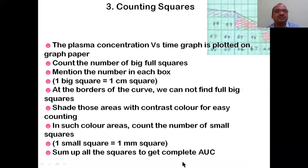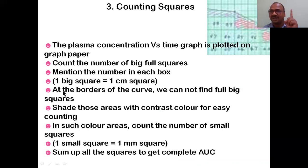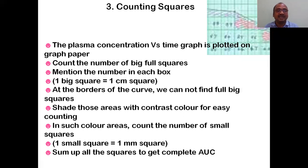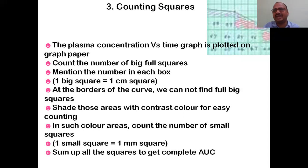Procedure: plot plasma concentration versus time on graph paper. Count the number of big squares - one big square equals one centimeter squared. At the borders, shade those areas with a contrast color and count the number of small squares - one small square equals one millimeter squared. Sum up all values and you can calculate the total area under the curve.